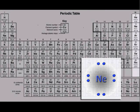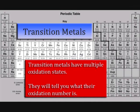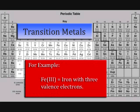Again, elements in our last group have complete outer shells. Because these elements have the same number of protons and electrons, they have a net charge of zero. Well, what about the transition metals? Transition metals have multiple oxidation states. These elements will tell you what their oxidation number is. This example shows the transition metal of iron, represented by Fe. Parentheses contains the Roman numeral 3. This indicates that this atom of iron has an oxidation number of 3.